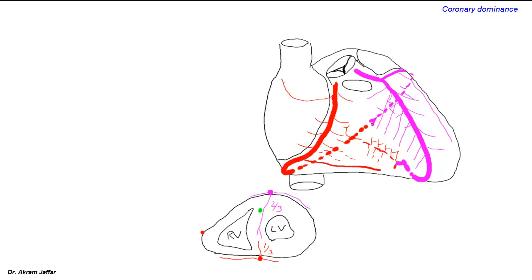Sometimes, in about one-third of cases, the circumflex branch either provides the posterior interventricular artery or an accessory branch running parallel to it. In about two-thirds of cases, the posterior interventricular artery is a branch of the right coronary artery — this is called right dominance. If it is a branch of the circumflex of the left, it is called left dominance. If contributed by both right and left coronary arteries, it is called codominance. The most common situation, in about two-thirds of cases, is right dominance.